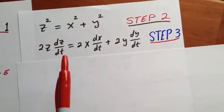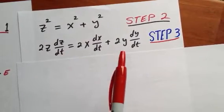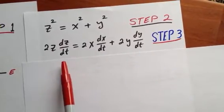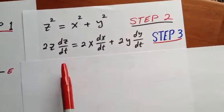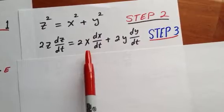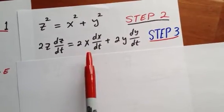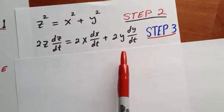Now step 4 is to plug in numbers. We want to find dz/dt when x is 3 miles and y is 4 miles.